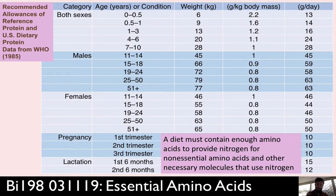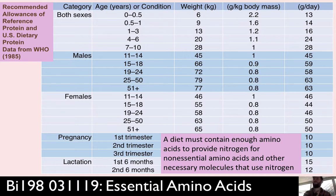A larger draw on protein for women is the production of milk — lactation. In the first six months of life, the child's exclusive source of protein should be mother's milk, and that baby needs about 13 grams per day according to the chart. The mother has to eat that extra 13 grams a day to produce milk for the baby.